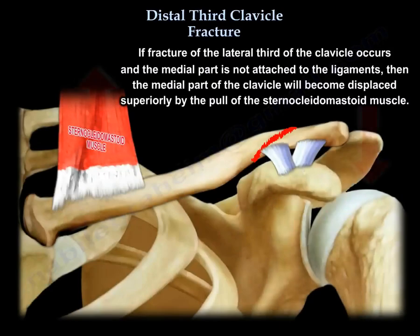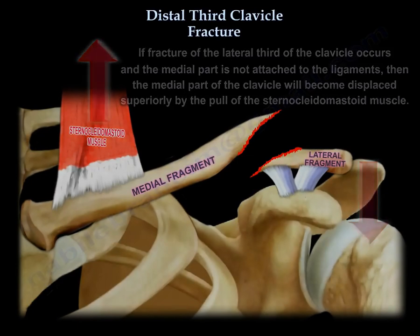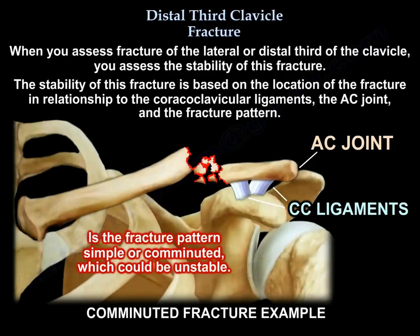So if you fracture the lateral third of the clavicle and the medial part is not attached to the ligaments, then that medial part of the clavicle will be displaced superiorly by the pull of the sternocleidomastoid. When assessing a fracture of the lateral or distal third of the clavicle, you assess the stability of that fracture.